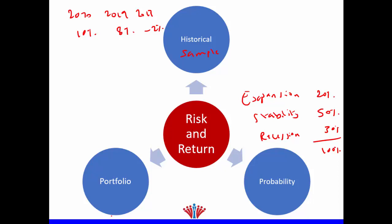The third type is a portfolio. When you invest, it's better to diversify. Let's assume you buy two shares — share A and share B. In your portfolio you include these two shares, and you'd like to know what will be the level of expected return and risk of this portfolio. You could include more, but here we'll just explain two shares, or two investments.